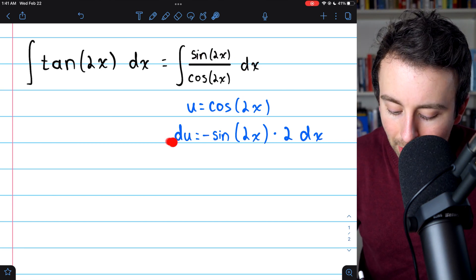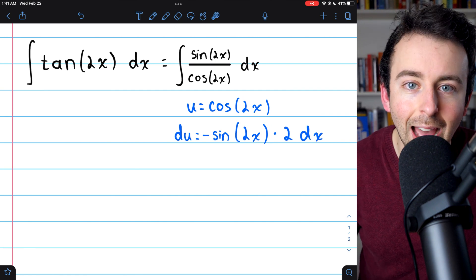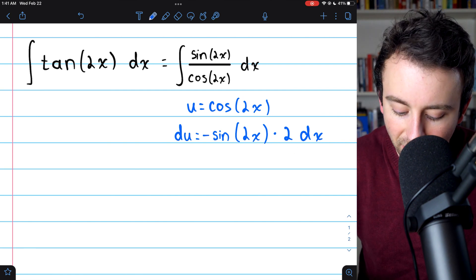Now, in order to do that, we can multiply everything by negative one-half. That will get rid of this negative, and it will get rid of that 2.